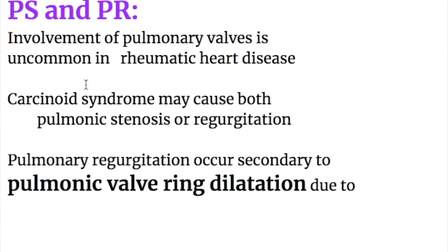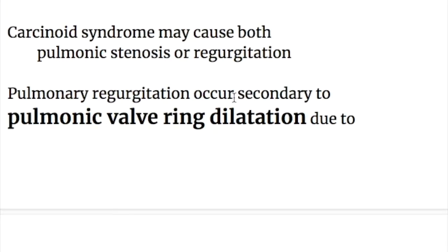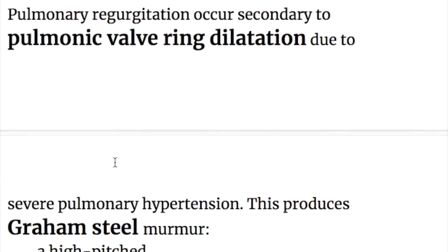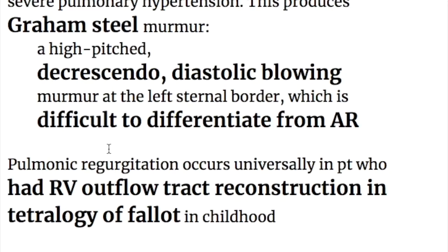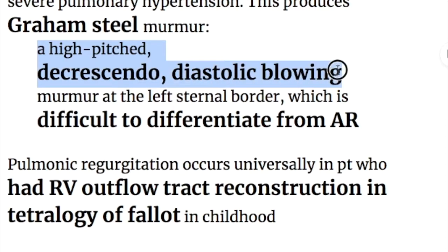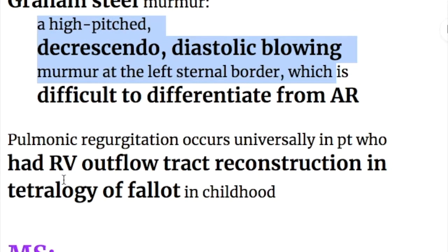Involvement of the pulmonary valves is uncommon in rheumatic heart disease. Carcinoid syndrome may cause both pulmonic stenosis and pulmonic regurgitation. Pulmonary regurgitation occurs secondary to pulmonary valve ring dilatation due to severe pulmonary hypertension, producing the Graham Steell murmur - a high-pitched, decrescendo, diastolic blowing murmur at the left sternal border, which is difficult to differentiate from aortic regurgitation. Pulmonic regurgitation also occurs universally in patients who have had right ventricular outflow tract reconstruction for tetralogy of Fallot in childhood.